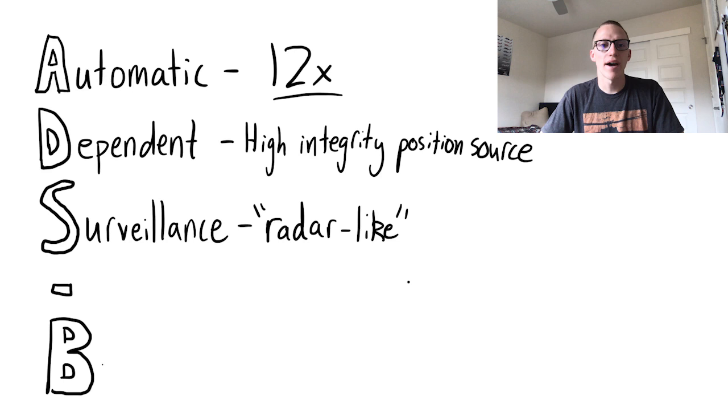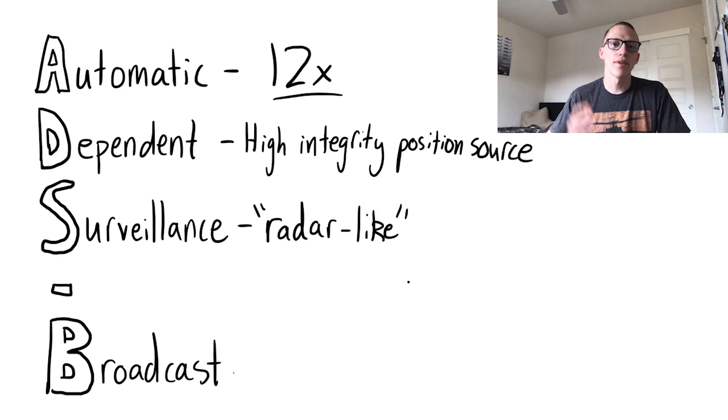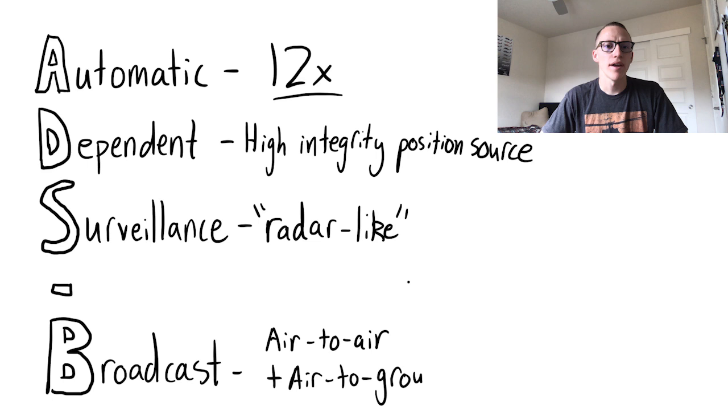B stands for broadcast. The aircraft broadcasts its position, info, and a unique ID. The position info includes latitude, longitude, altitude, velocity, and more. The broadcast travels from both air-to-air and air-to-ground, which we'll discuss next.